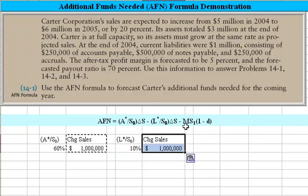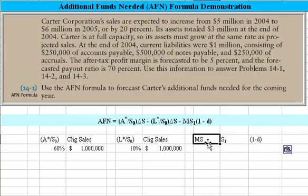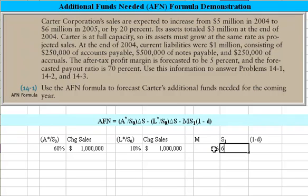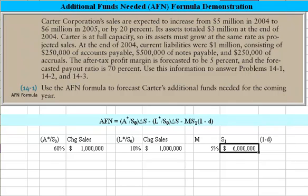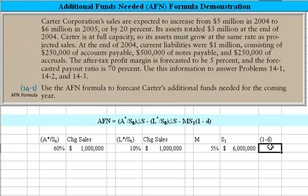Now we need the profit margin M, S1 — sales for the next period — and 1 minus the dividend payout. The profit margin is 5% as given in the problem. S1 is $6,000,000. And 1 minus the dividend represents the retention ratio, which equals 1 minus 70%, since 70% is paid out.